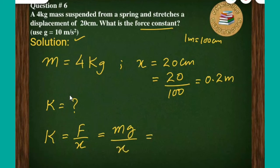I would put the values. The mass is 4, and the gravity value is 10, and the displacement is given, that is 0.2 meter.